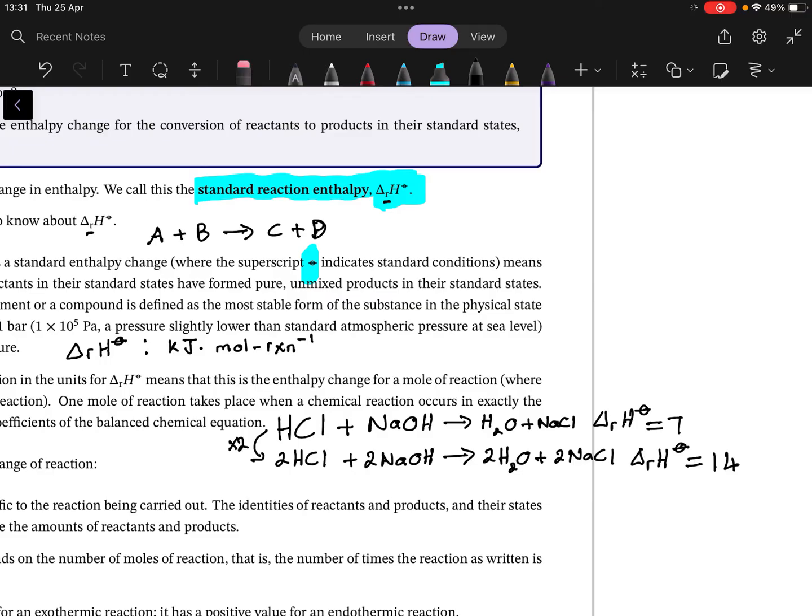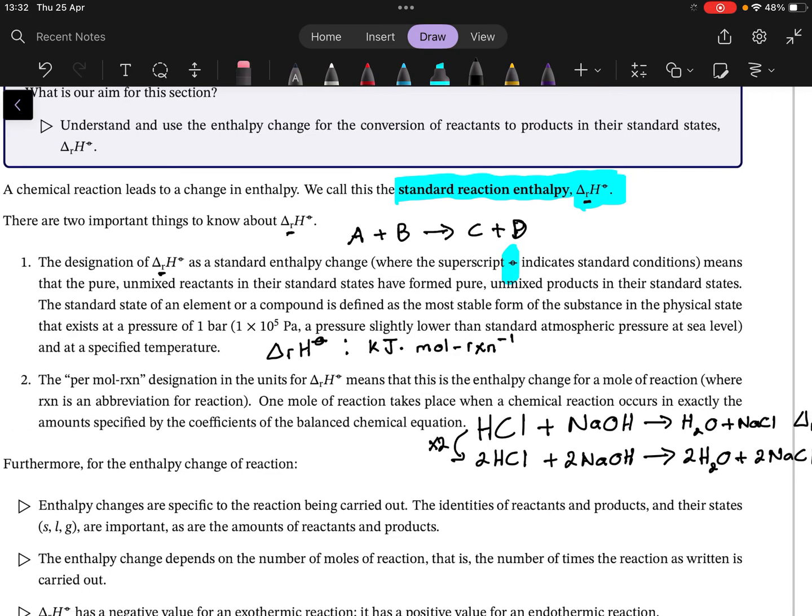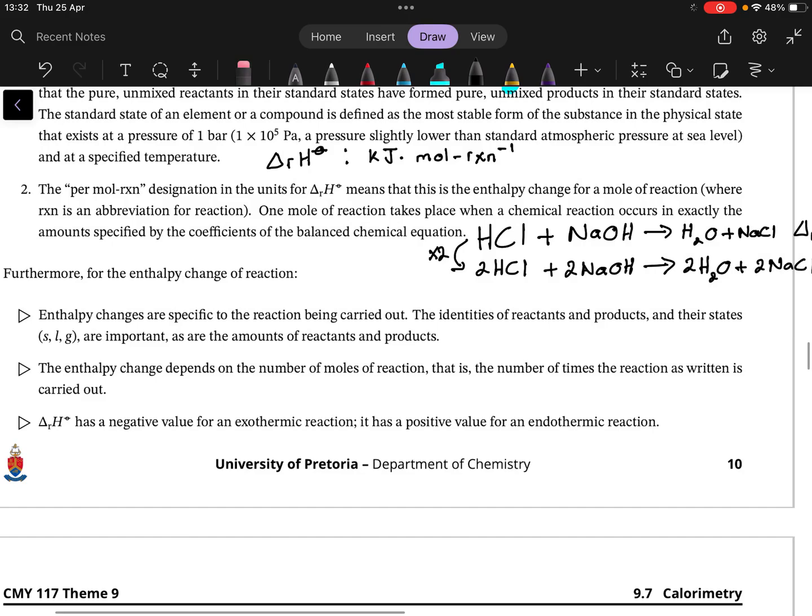So if you look up an enthalpy value, it must be for the lowest common stoichiometric combination. The value will be for the reaction as balanced in the given equation.